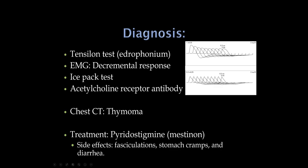A simple bedside test is the ice pack test: place ice over the eye with ptosis for a minute or two. When things cool down, acetylcholinesterase is inhibited slightly, and the eye elevates back to normal for a period of time. The acetylcholine receptor antibody test is positive in more than 85% of patients with generalized myasthenia; if someone has purely ocular myasthenia, it is only about 50% positive. We always perform a chest CT when diagnosing myasthenia gravis — only 5–10% have a thymoma, but we always need to look.